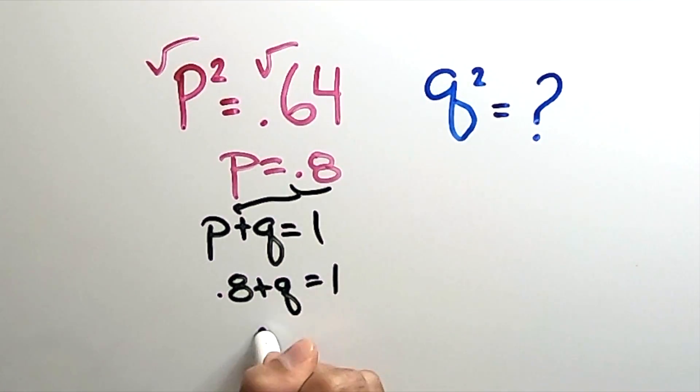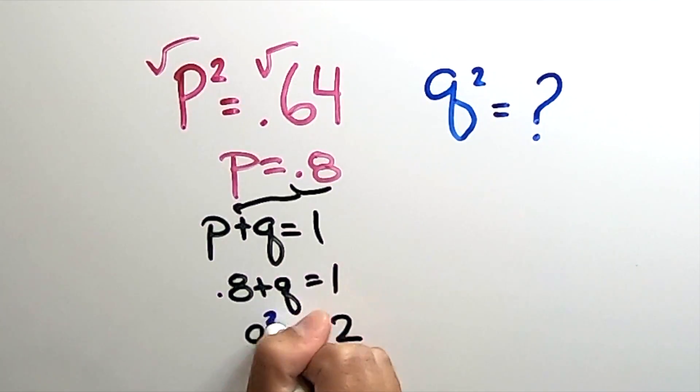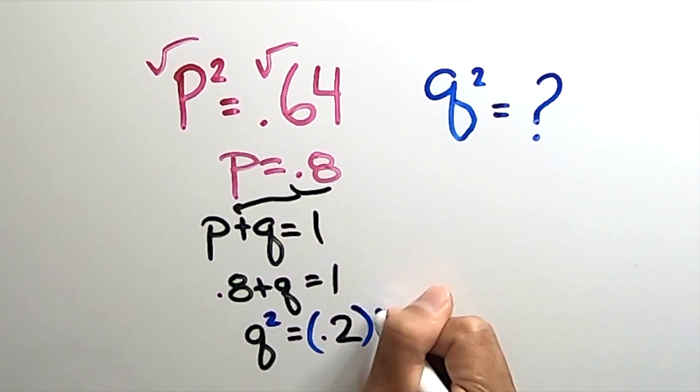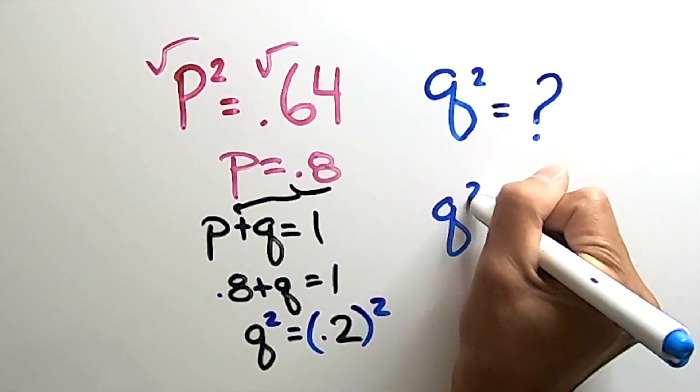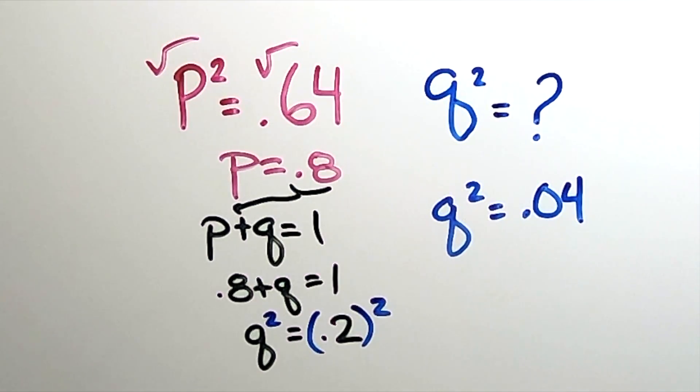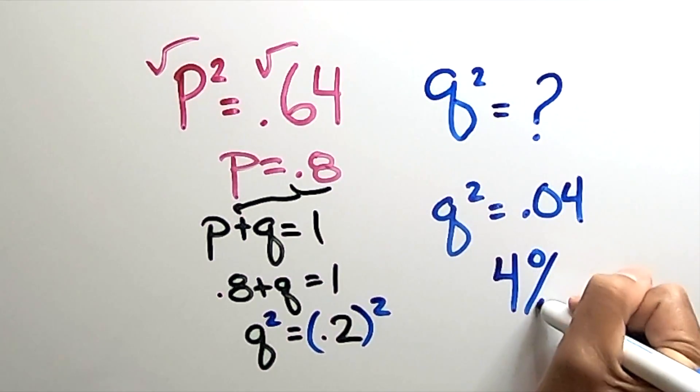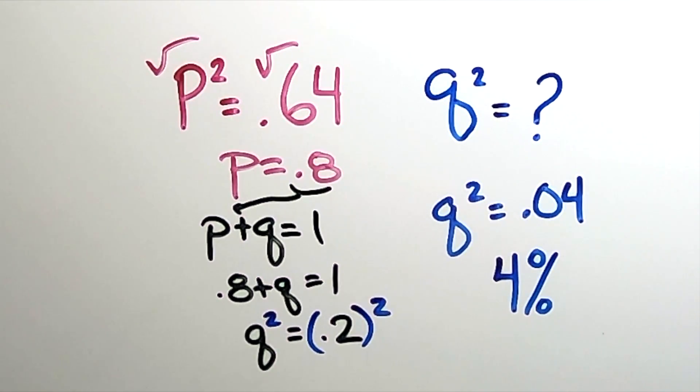q = 0.2. So now all we have to do is square the q. So square the q on both sides to get q² = 0.04. There you have it. 0.04 is the frequency of white cats in this population. So we could say 4% white cats in this cat population.